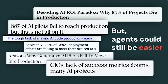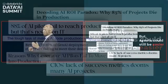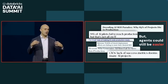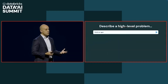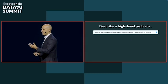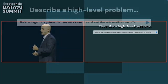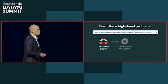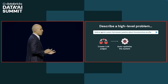It's still really, really challenging to build agents that are super reliable and just get the work done. From a high level, you describe the high-level problem you're trying to solve — so, build an agentic system that answers questions about the automotives that we offer. Then we do three things: we automatically create LLM judges for your specific problem, and we auto-optimize the system.